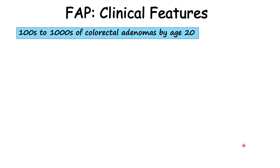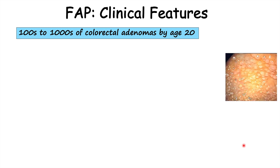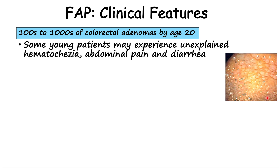Now let's talk about clinical features more specifically. The average age of onset of polyposis — numerous polyps or adenomas within the colon or large intestine — is around age 16, late teens. By age 20, patients often have hundreds to thousands of colorectal adenomas or polyps, as seen in images showing an enormous amount of adenomas within the large intestine. Oftentimes these colorectal adenomas cause no symptoms until they become cancers, but some younger patients may experience unexplained hematochezia — bright red blood per rectum — rectal bleeding.